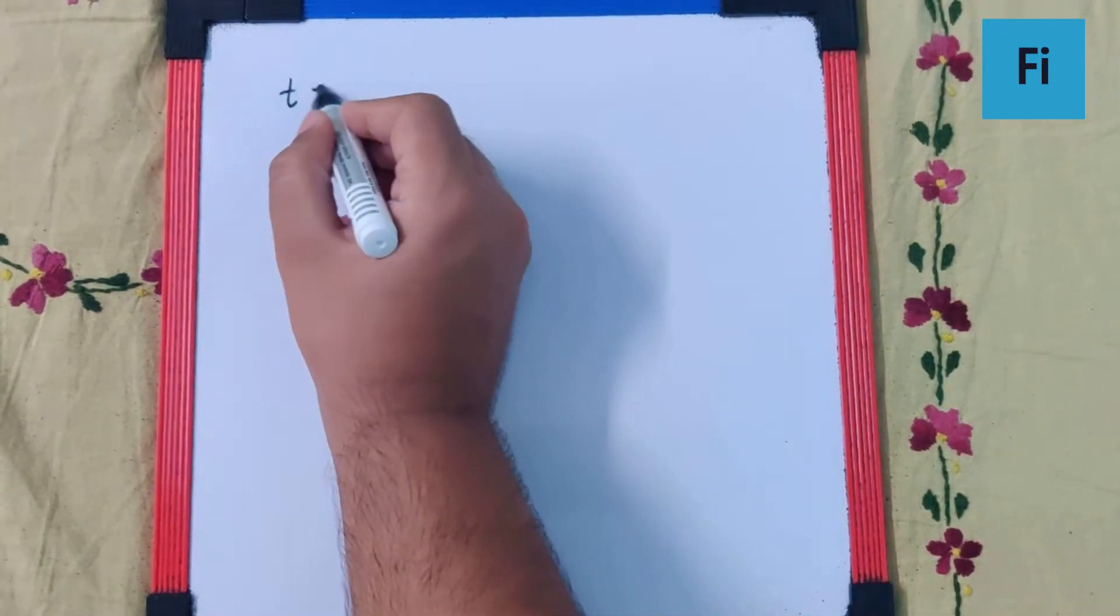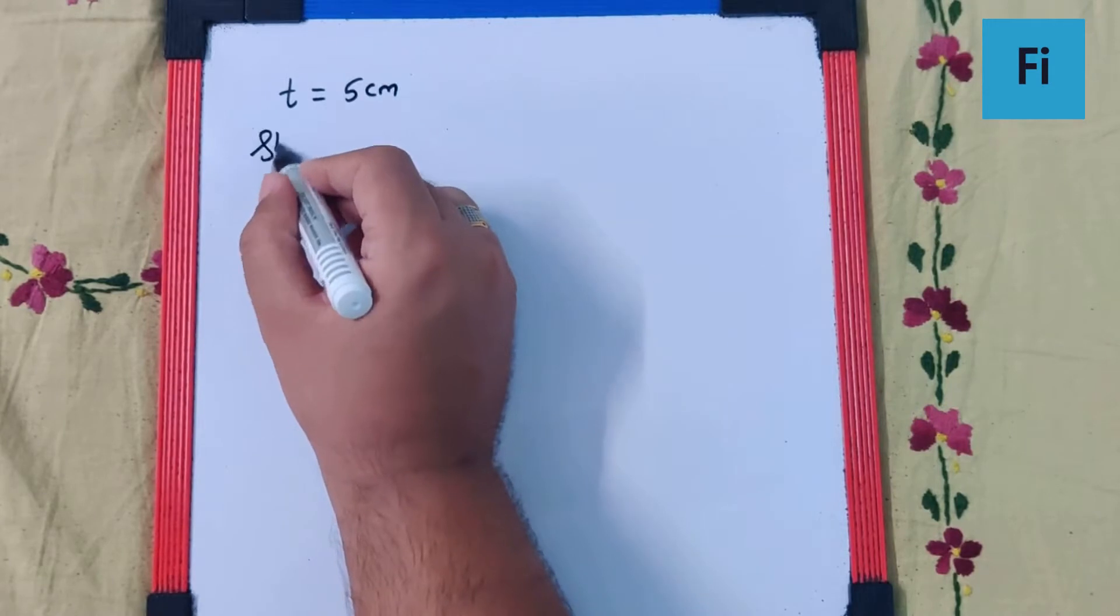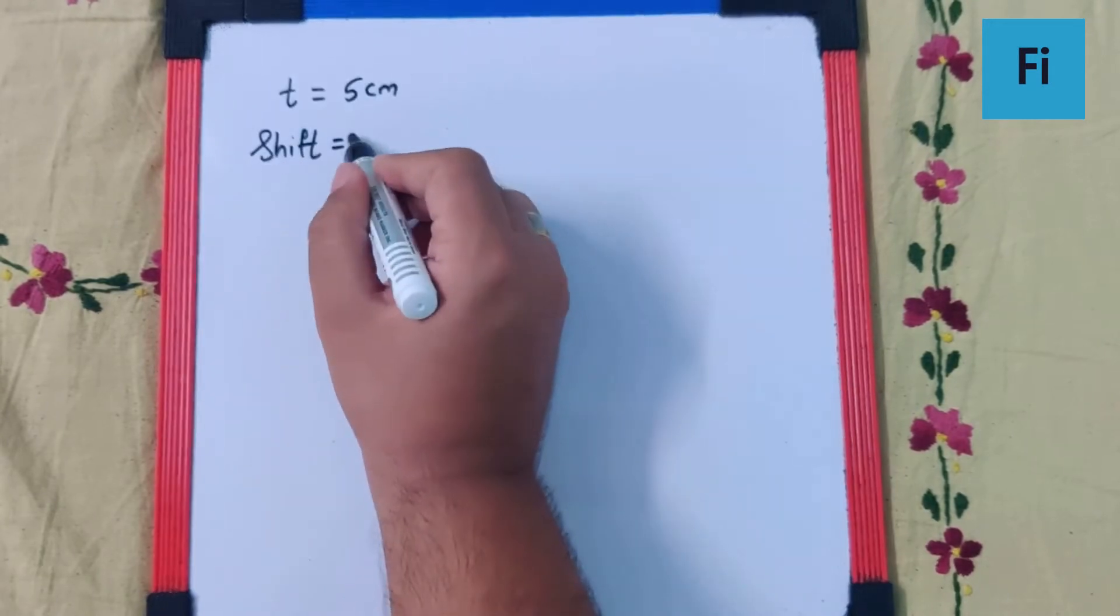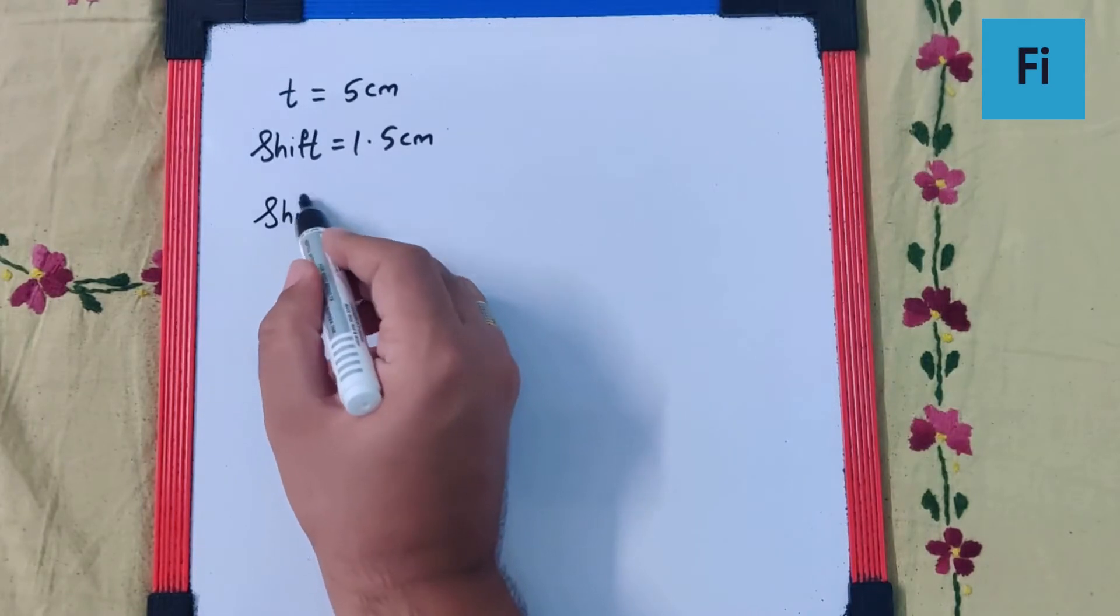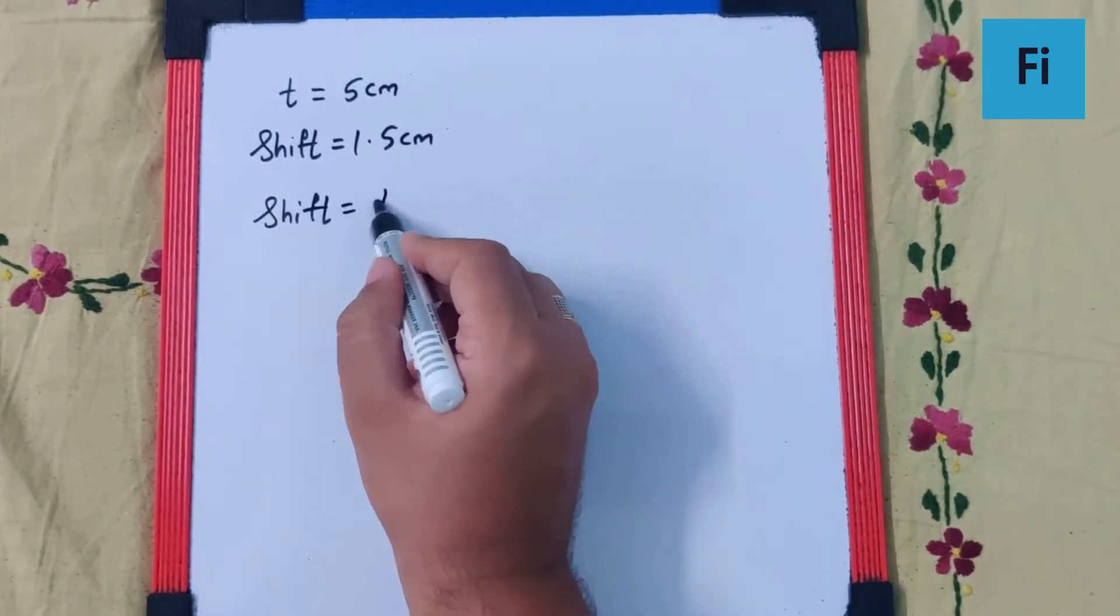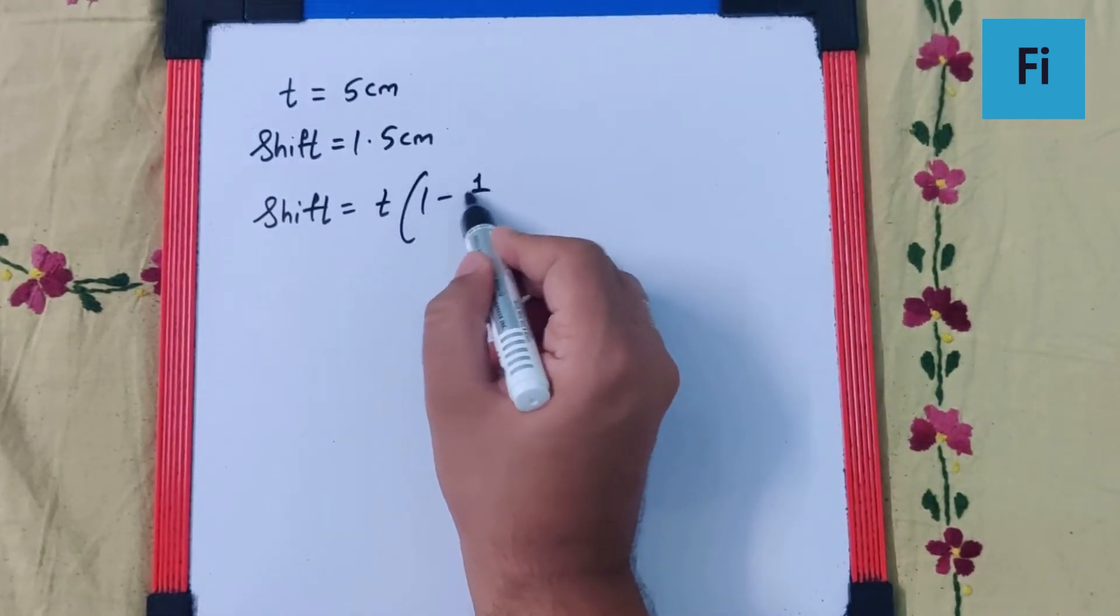In the question, the thickness is 5 cm and the shift is 1.5 cm. We have to use the shift formula, which is thickness times 1 minus 1 by mu.